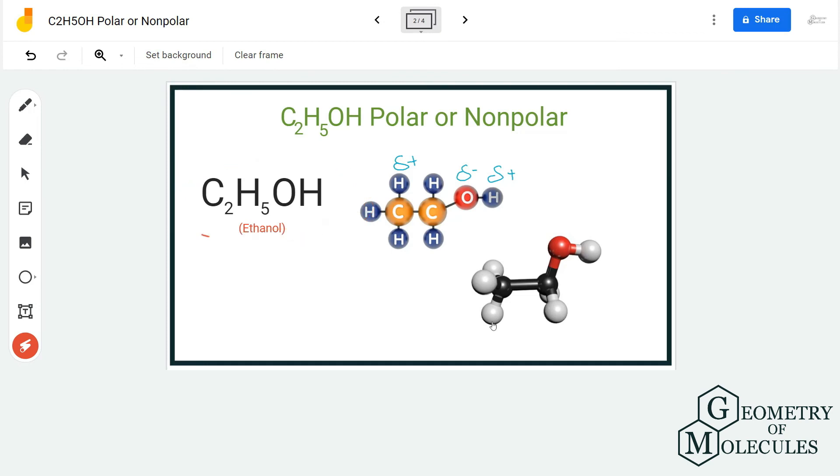And hence ethanol is a polar molecule. So C2H5OH, that is ethanol, is a polar molecule given that there are the formation of poles in this molecule and there is a difference of electronegativities between carbon and the oxygen atom involved in the structure.